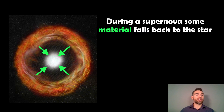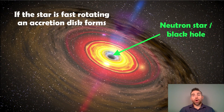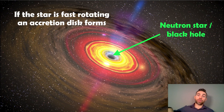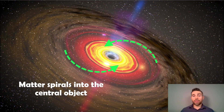During a supernova, some of that ejected material might fall back onto the remnant — whether that's a neutron star or a black hole — helping it to grow a bit more as material falls onto it. But if that star is fast rotating, you get an accretion disk forming — a disk of material rotating around the central object in the same plane as its rotation. The inner part of the accretion disk falls onto the neutron star or black hole; it in-spirals in over time and will be depleted fairly quickly, falling onto the central object.